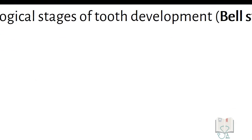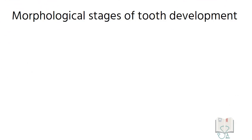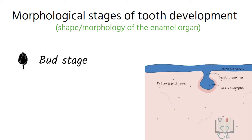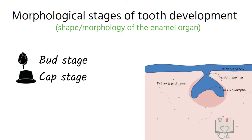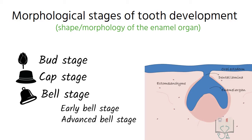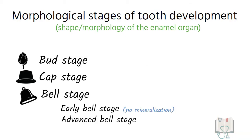In the morphological stages of tooth development, the stages are named according to the shape of the enamel organ. In the bud stage it looks like a flower bud, in cap stage it looks like a cap. The enamel organ then continues to grow and appears like a bell, hence called the bell stage. The bell stage is further divided into early bell stage and advanced bell stage. The main difference between the two is the absence and presence of mineralization.